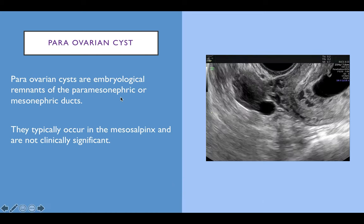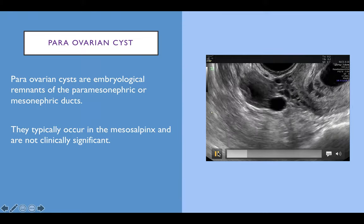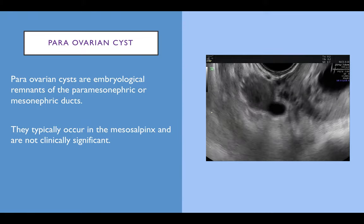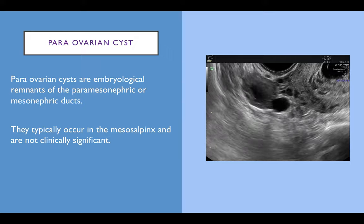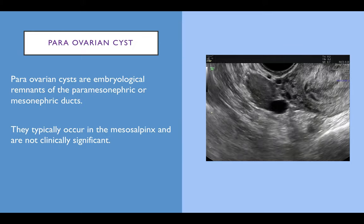Paraovarian cysts are embryological remnants of the paramesonephric or mesonephric ducts and typically occur in the mesosalpinx, similar to fimbrial cysts. They are not clinically significant. This is a very small one seen adjacent to the right ovary and moving separately from it — these can also be quite large.